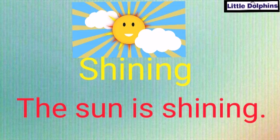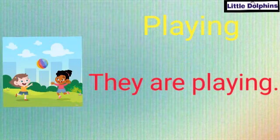The sun is shining. This word 'shining' is a verb. Shine means chamakna. The sun is shining means suraj chamak raha hey. So doing words are verbs. See kids, they are playing. Yes, playing is a verb because this word is describing what's going on.